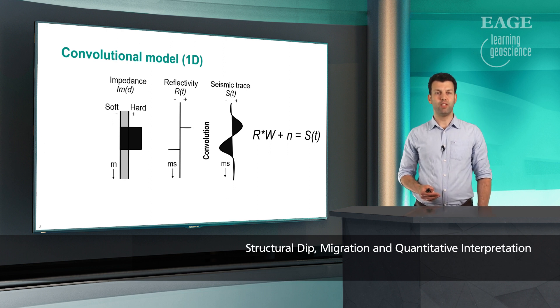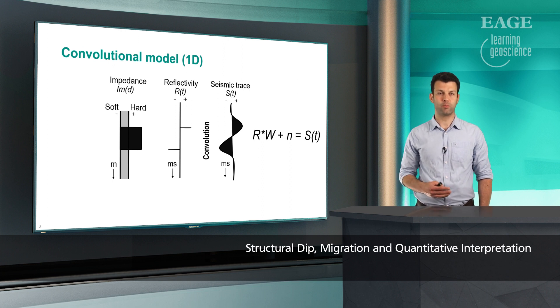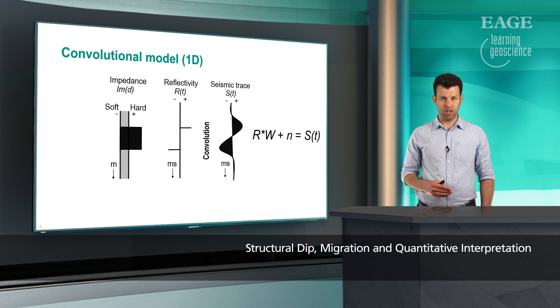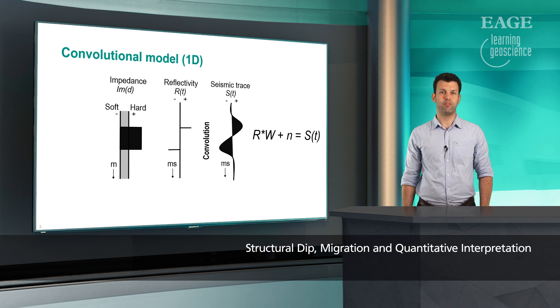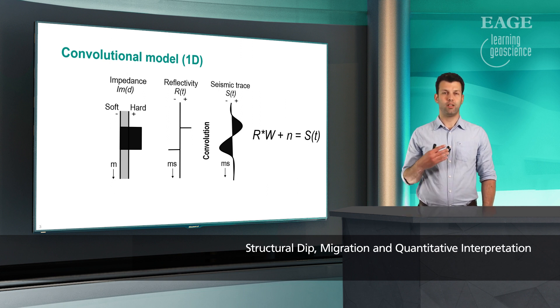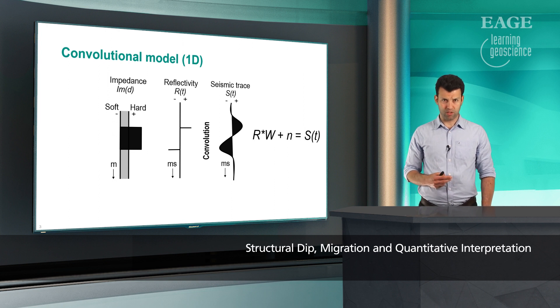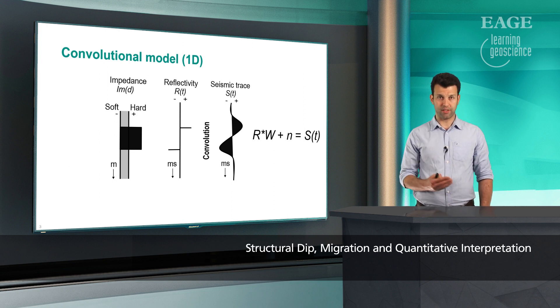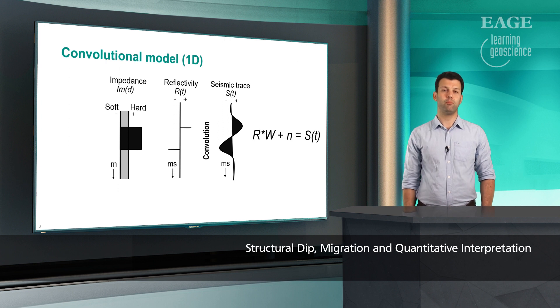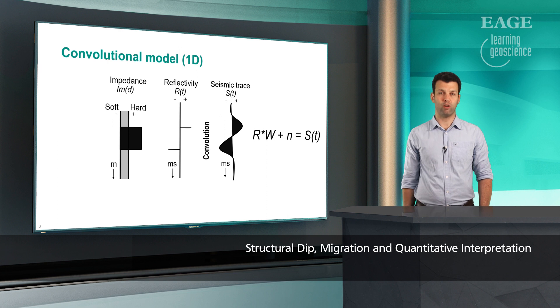This is summarized in this picture here. On the left, we have the impedance profile, those are layer properties, could be acoustic and or elastic properties. In the middle, we have the reflectivity or reflectivity series. On the right hand side, we convolved that reflectivity with the wavelet. And that is the principle behind convolution, which states that migration is related to the reflectivities by a linear formula explained by convolution.